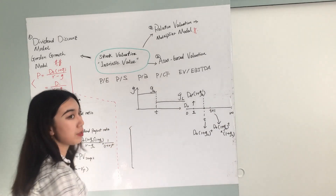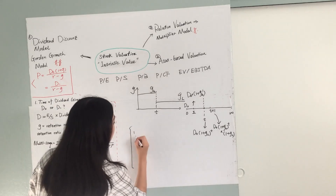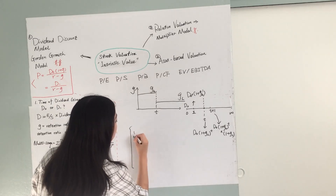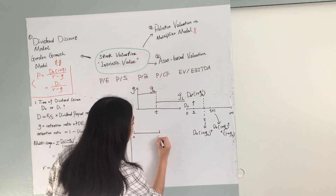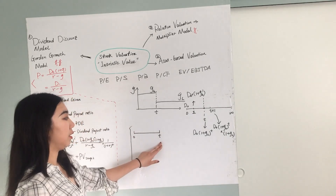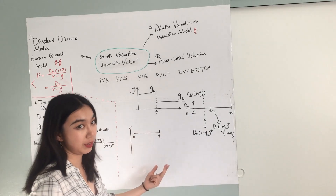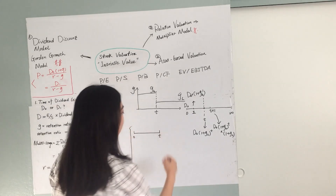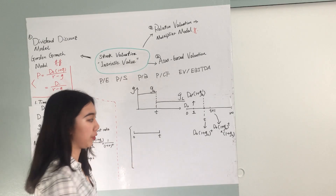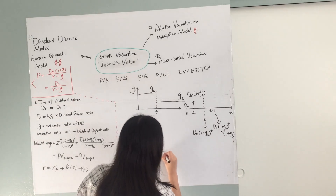What we can do is separate the timeline into two halves. The first period runs from time zero to time T, which is when the dividend growth rate changes. The second period runs from T to infinity.